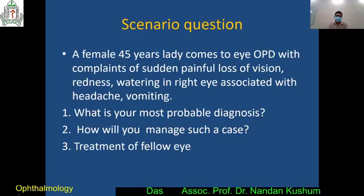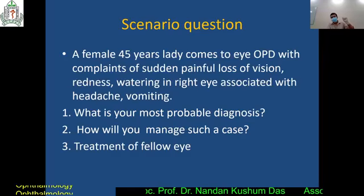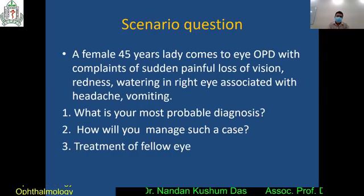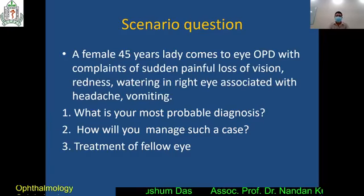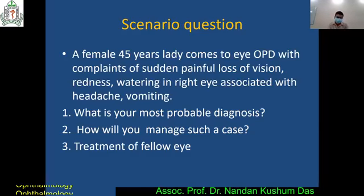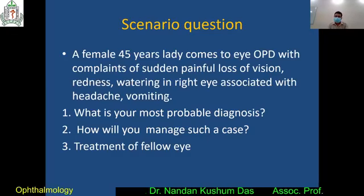Treatment of the fellow eye is very, very important. Maximum students are misguided about this. The fellow eye's pupil is dilated, so your target is that the pupil should be constricted. If the pupil is in miosis, there is usually no chance of an attack of narrow-angle glaucoma. So you will give pilocarpine drops, one drop four times per day, continuously.